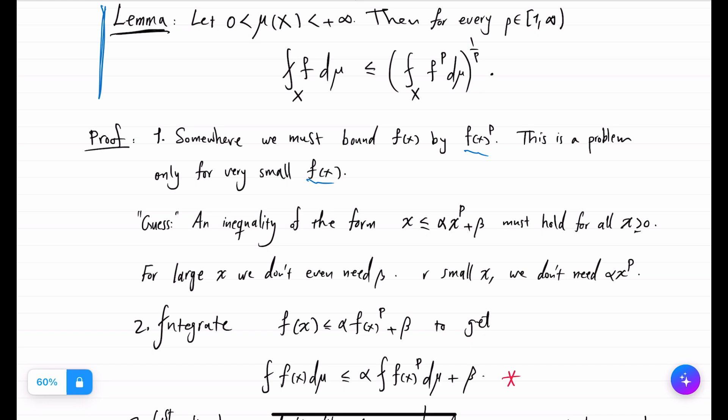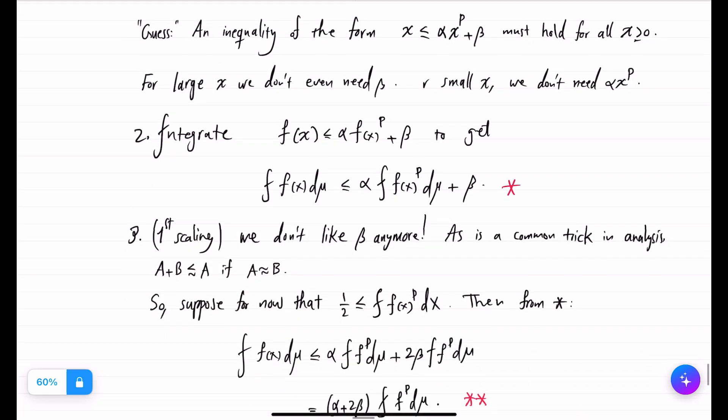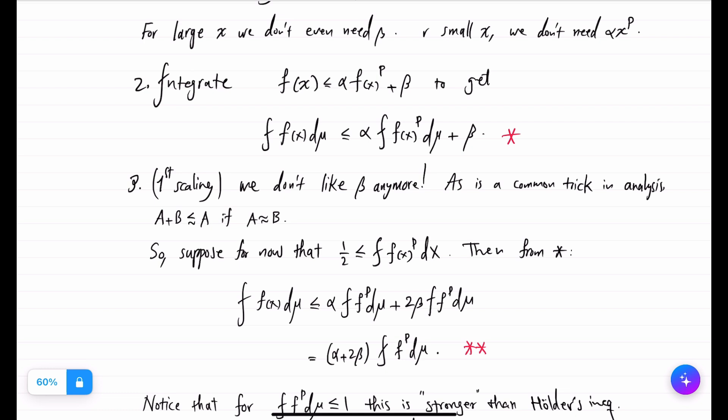Okay, once you have such an inequality, you integrate, you get star. So now you have some control of integral of f in terms of integral of f to the p. But now we are starting to hate this β here because there is no f in it.